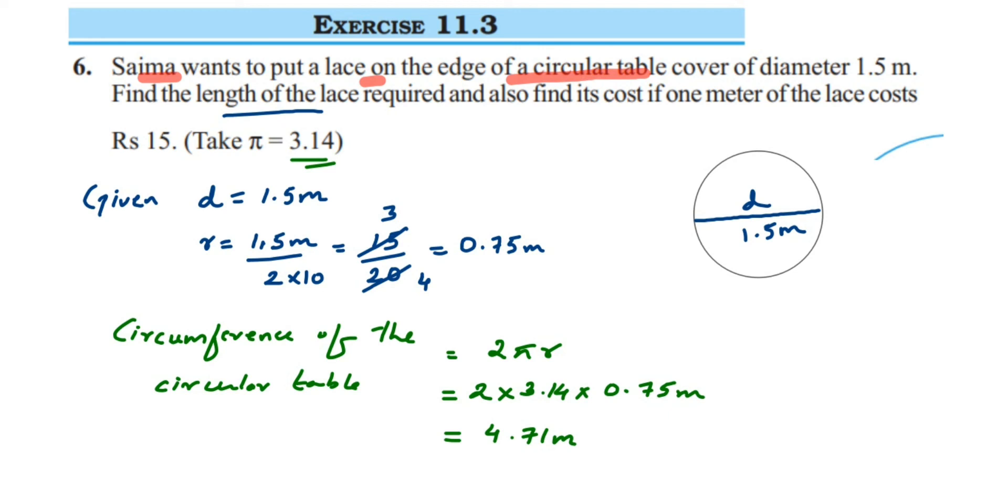The second part they are asking us to find out the total cost. Total cost - how much if 1 meter is of 15 rupees? How much you require for 4.71 meter? I hope it's clear - they are charging 15 rupees for 1 meter and she requires 4.71 meter.